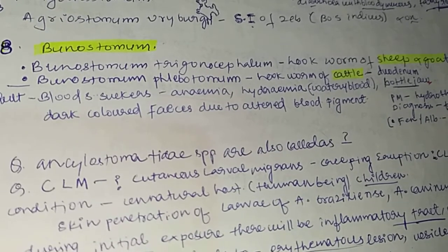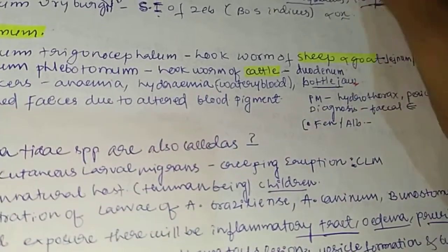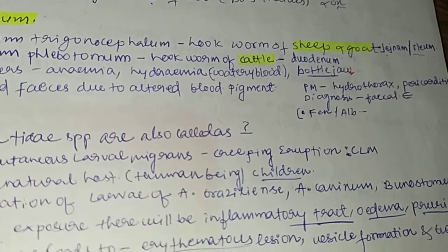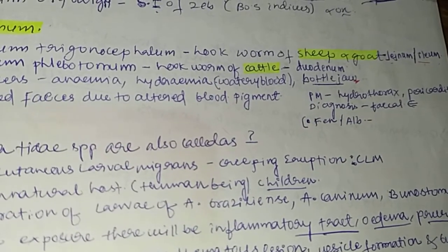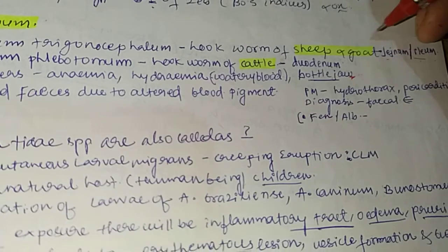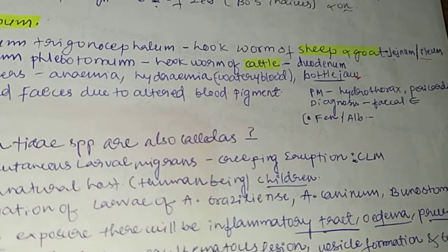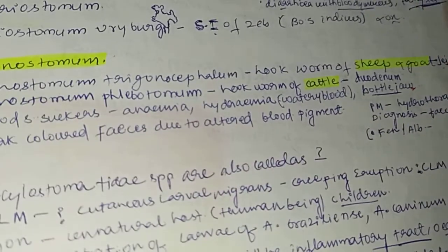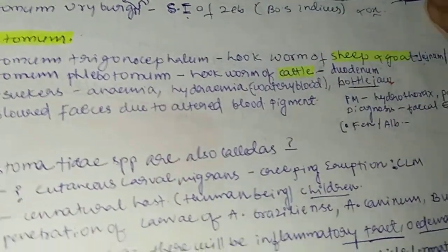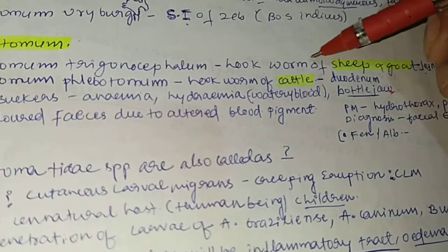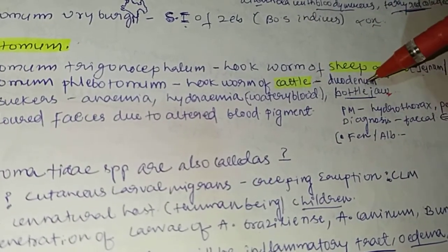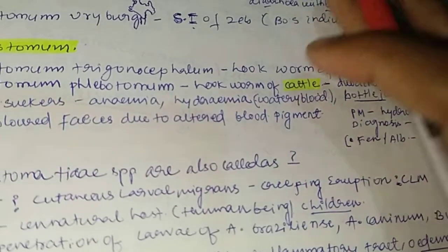Buenostomum trigonocephalum is also called the hookworm of sheep and goat, and its predilection site is the jejunum and ileum. Buenostomum phlebotomum is also called the hookworm of cattle, and its predilection site is the duodenum.